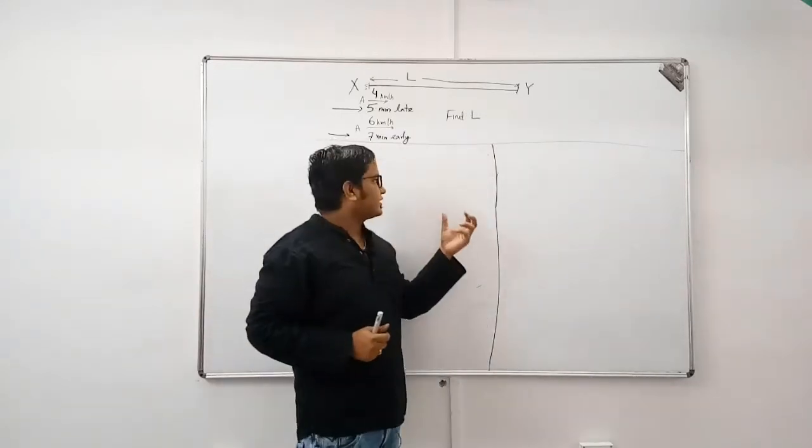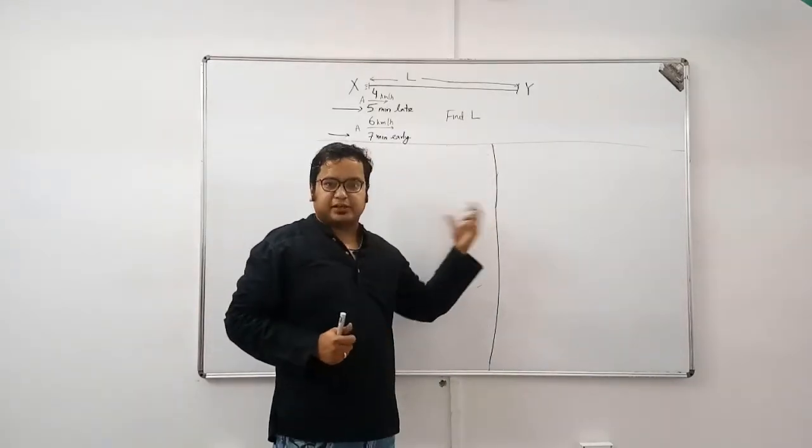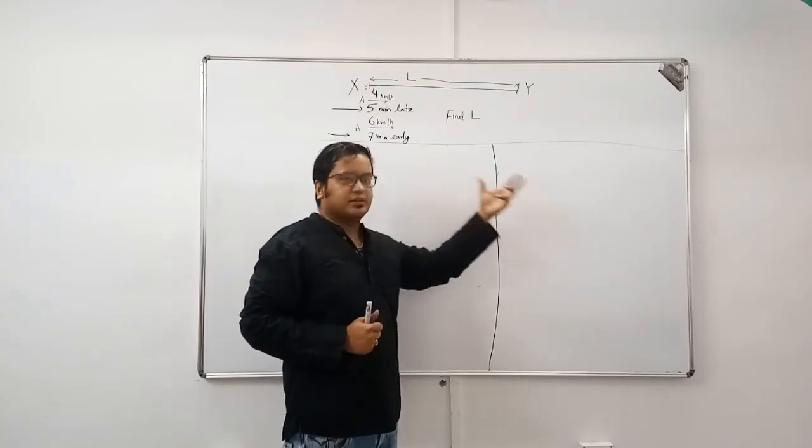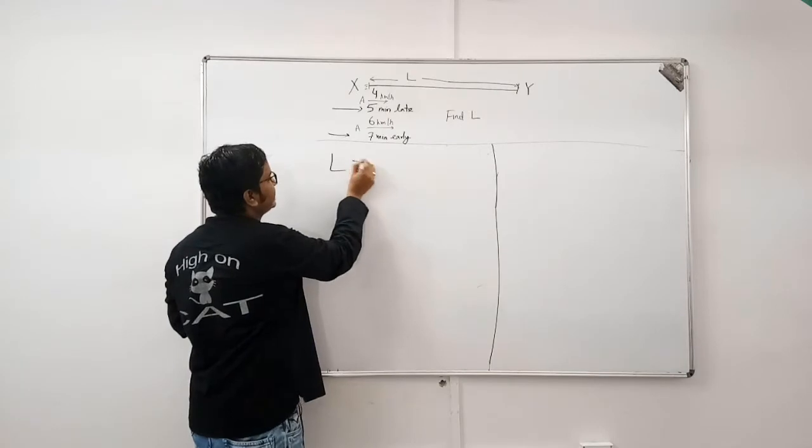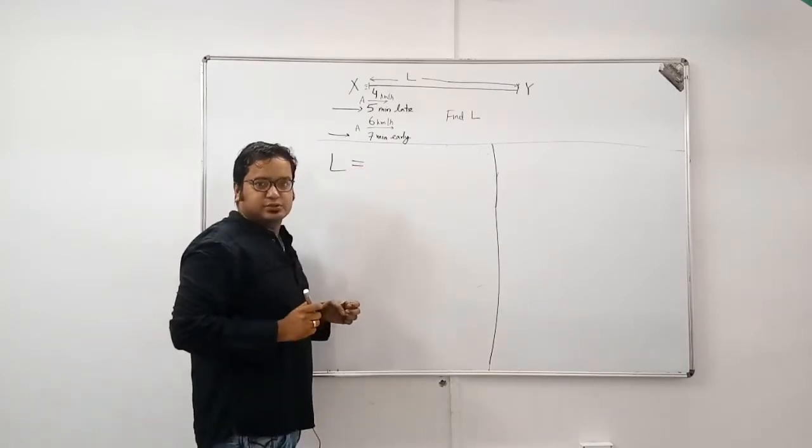We will solve this question using multi-capability. I will first explain the traditional method and then the train method. So, length can be written as distance is equal to speed into time.